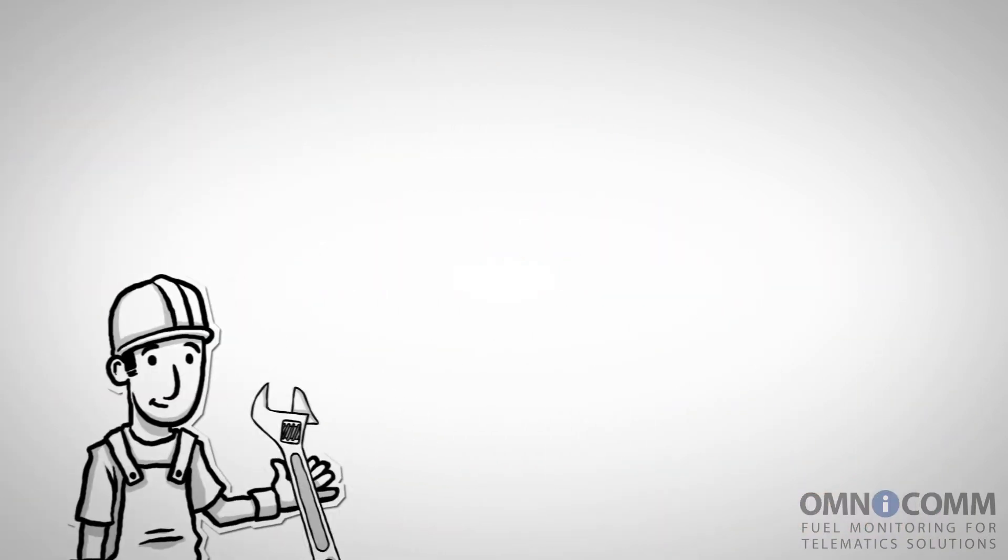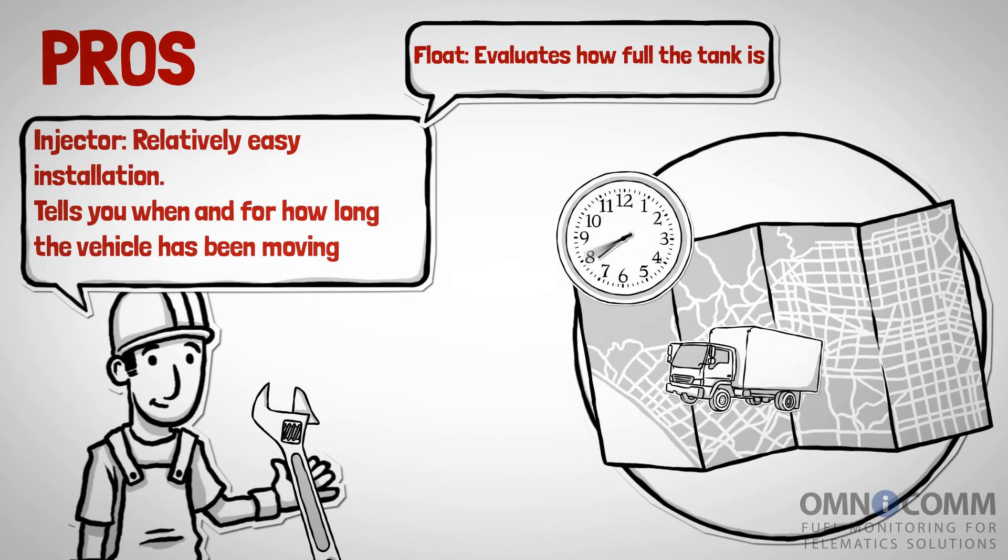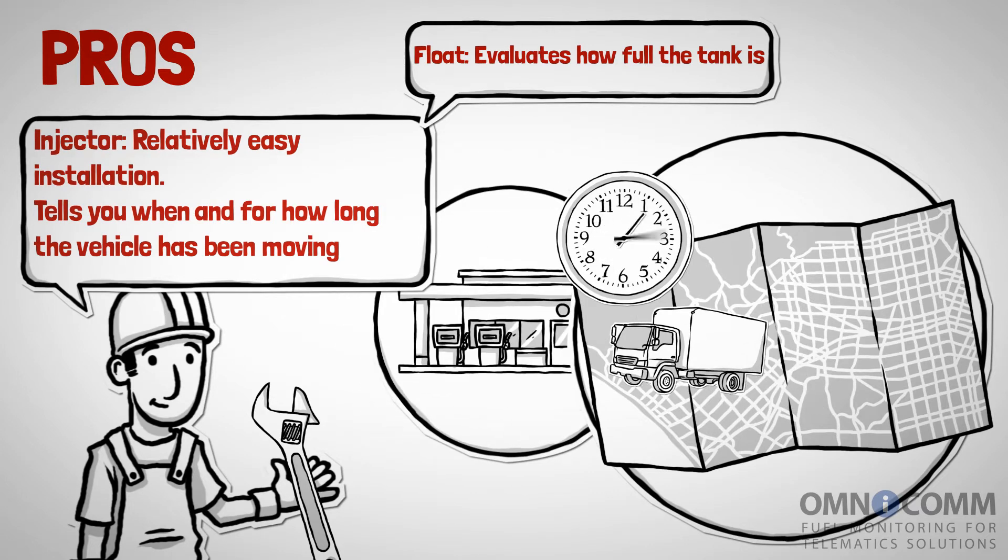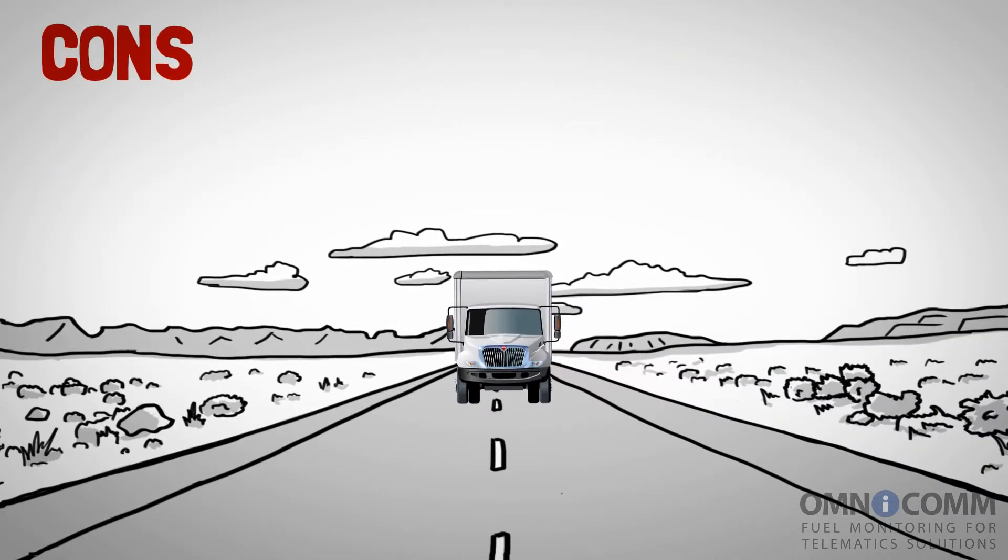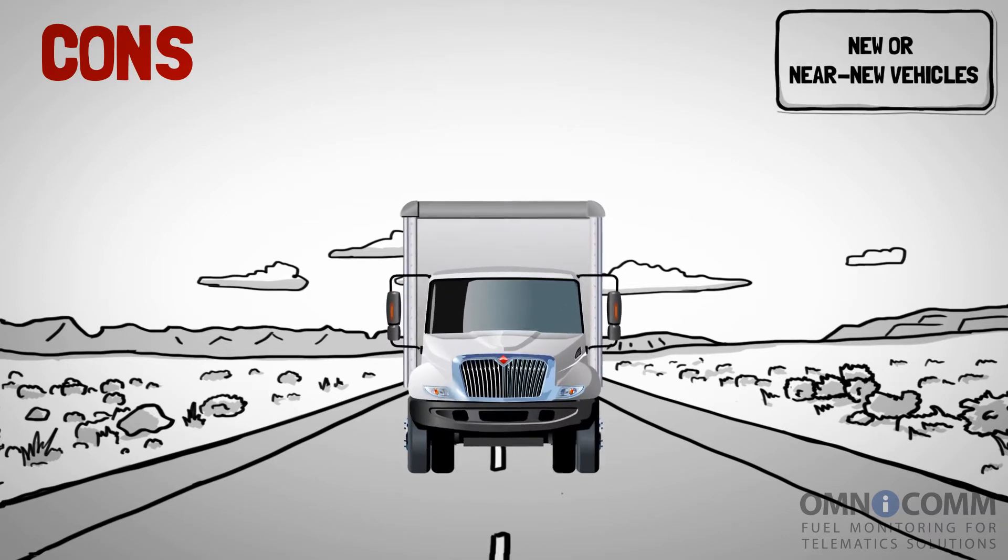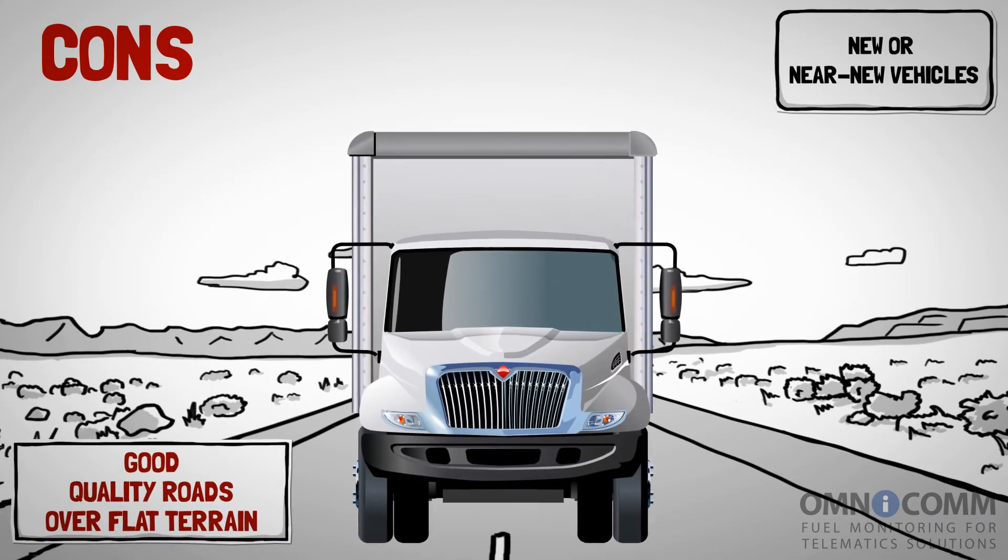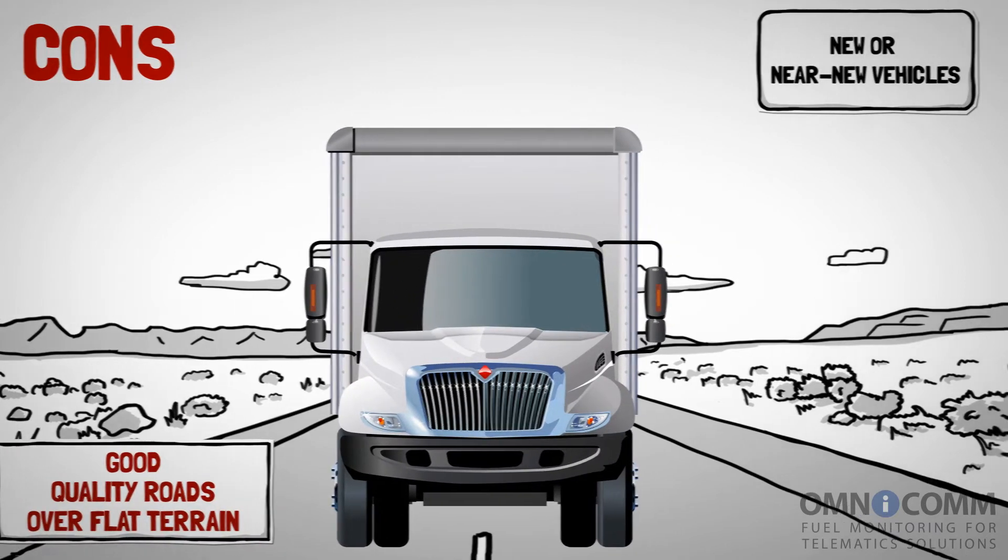CAN Bus Sensors are relatively easy to install, and using a combination of both helps you determine when and for how long the vehicle was moving, when it was fueled, as well as how full its fuel tank is. Unfortunately, reliable results are only guaranteed when the sensors are installed on new or near-new vehicles that travel along good-quality roads over flat terrain. Steady rate of traffic is a must, too.